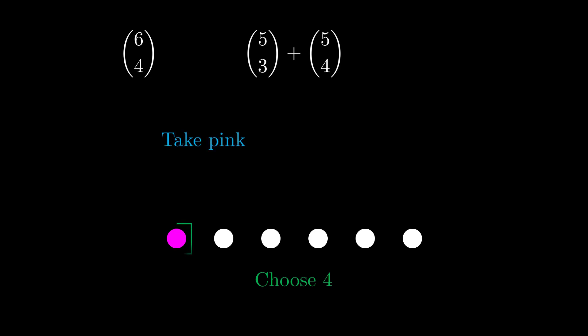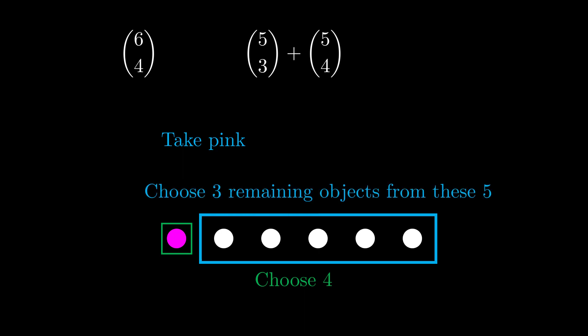So let's say I want to take the pink one. That means I've got this guy already. And so I guess I only need to choose 3 others from those. And so I could choose those 3 or those 3. The point is I only need to choose 3 remaining objects from these 5. And choosing 3 things from 5 is the same as that number there, 5 choose 3.